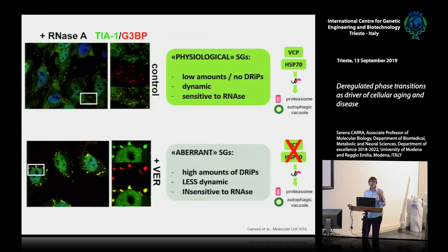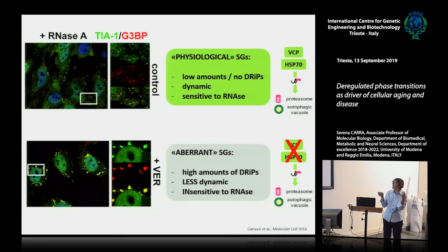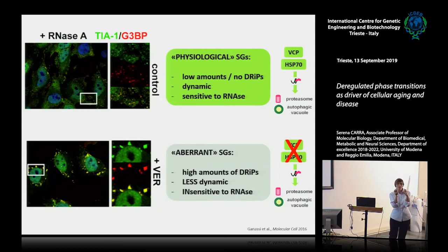This data allowed us to define two populations of stress granules. The first are physiological stress granules that form in cells where protein quality control works perfectly: they have no DRiPs, are very dynamic, and because they contain a lot of RNA, if you treat cells with RNase A they are digested, leaving just a few small protein component dots. But when protein quality control is defective, you end up with aberrant stress granules enriched for DRiPs — they are less dynamic and not sensitive to digestion with RNase A, because their build-up is now based on protein-protein interaction and therefore not digested by RNase A.